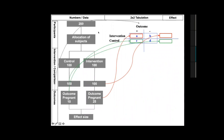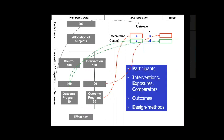We now understand how the two-by-two table is to be constructed. The question is how from this information we can calculate effect size. Remember we have participants, intervention, exposure, outcome, and design. The two-by-two table is a representation of your question in a simple way where numbers can be presented. The total in the two groups is the total of your participants, the intervention is the top row, the comparison is the bottom row, and the outcome is the first column.